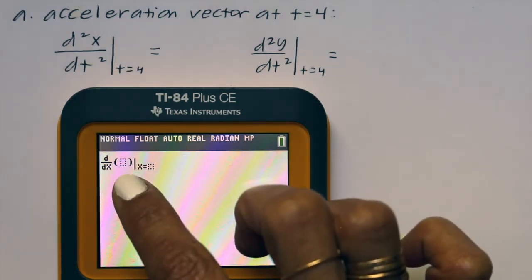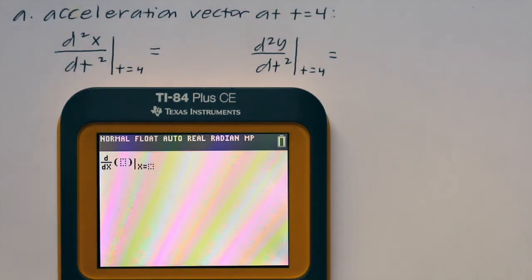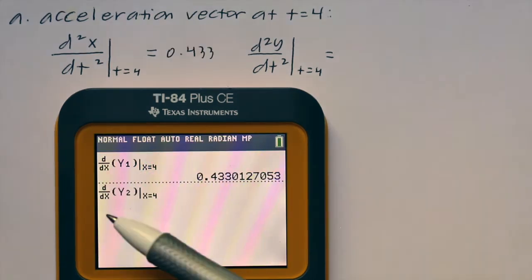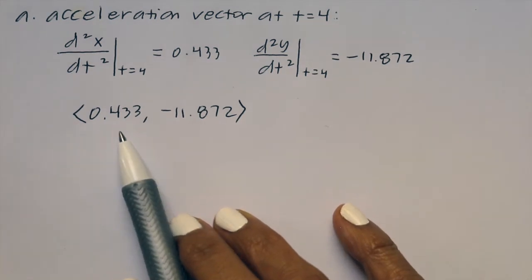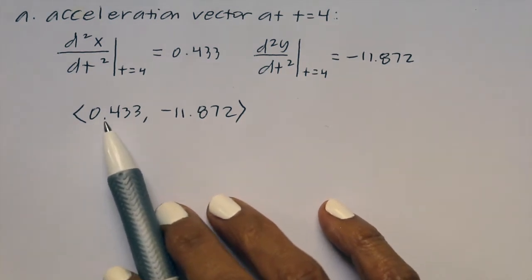First we're going to take the derivative of dx/dt, so we're going to call up y1 and plug in 4 for t, and you get 0.433. I did the same thing, math 8 for y2 because that's our dy/dt, and you get -11.872. So here's our acceleration vector when t equals 4: (0.433, -11.872).